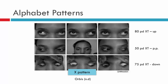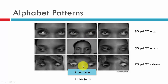Here we have a patient in nine positions of gaze who has an X pattern. In primary position she has a large exo deviation, and in up gaze again she has a large exo deviation, and in down gaze also a large exo deviation. Upon looking at her it isn't immediately obvious whether she has an X pattern. But the values show: a 50 diopter XT in primary, increasing to 80 diopters in up gaze and 75 diopters in down gaze — a significant increase in the exo in both up and down gaze from primary — classifying this patient as having an X pattern.